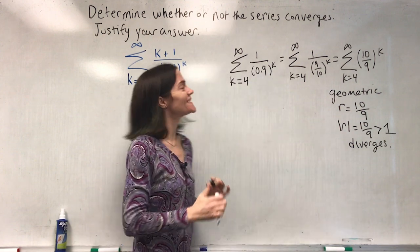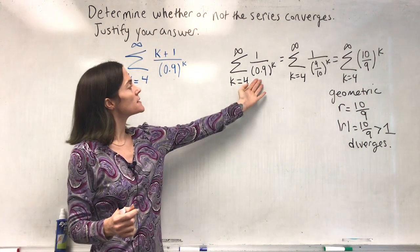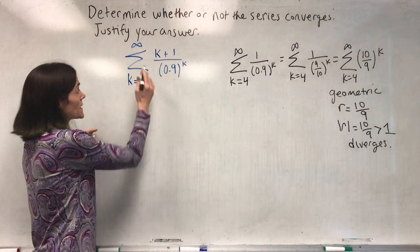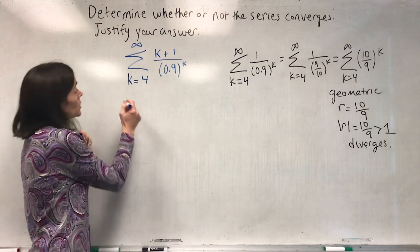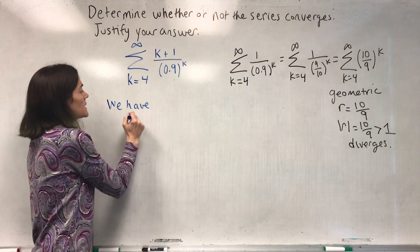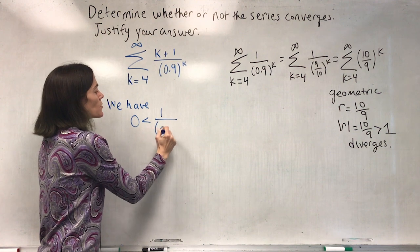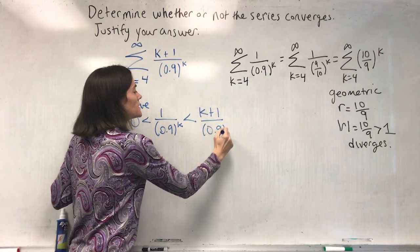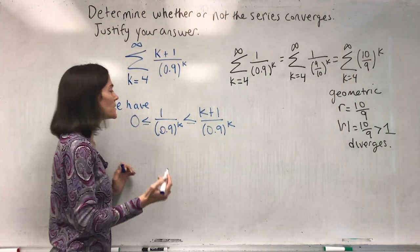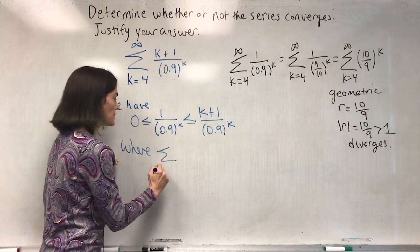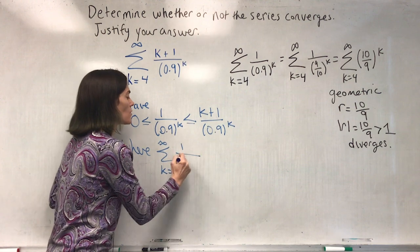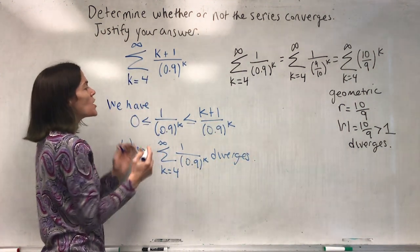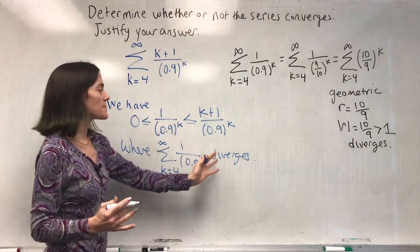We have this divergent geometric series. Comparing to our original series, the only difference is the numerator — in particular, the original series is always bigger. We see that zero is less than one over 0.9 to the k, which is less than k plus one over 0.9 to the k. The sum from k equals four to infinity of one over 0.9 to the k diverges, as we showed.